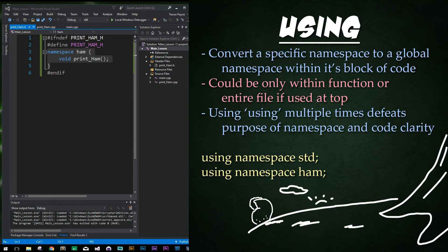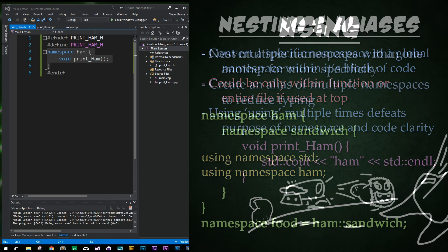You can't talk about namespaces without talking about the keyword 'using'. We've been using 'using namespace std' or standard to reduce the amount of typing we do. I would recommend careful use of this keyword though, because using it too much can result in naming conflicts in your program and defeat the whole point of the namespace altogether.